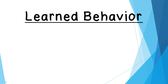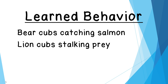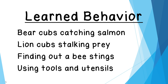Some examples of learned behaviors: bear cubs know they're hungry, but they have to be taught how to go to the river, when the salmon are running and jumping out of the water, and how to catch them with their mouth. Another example — lion cubs are taught by their mothers how to stalk a gazelle and other prey so they can eat. They learn by watching their mother. Also, finding out that a bee stings is not something you're born knowing — you sometimes have to learn by being stung.